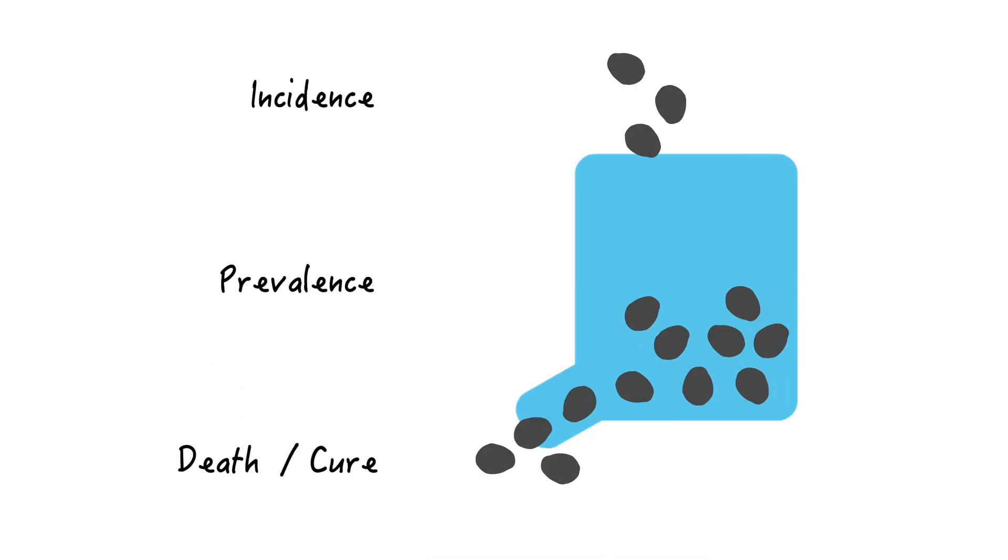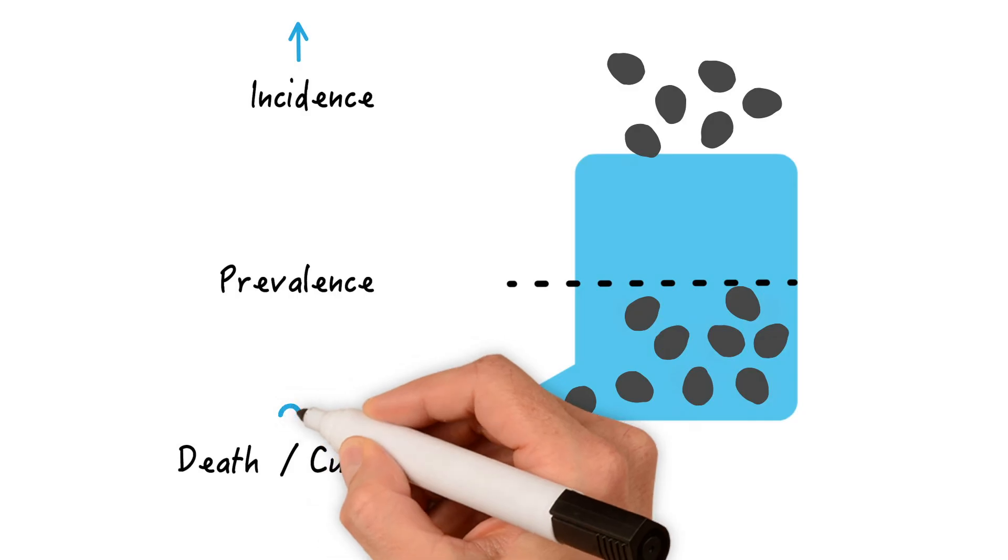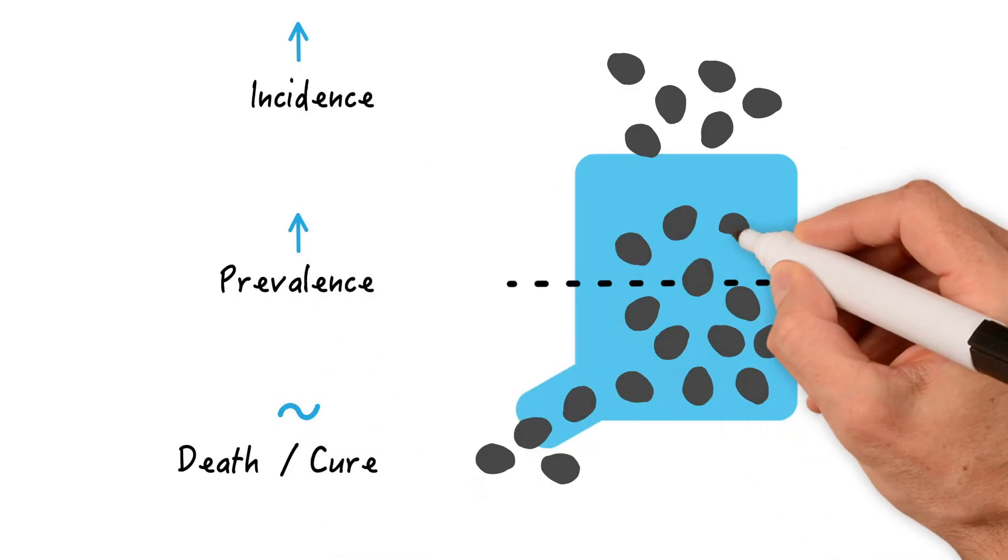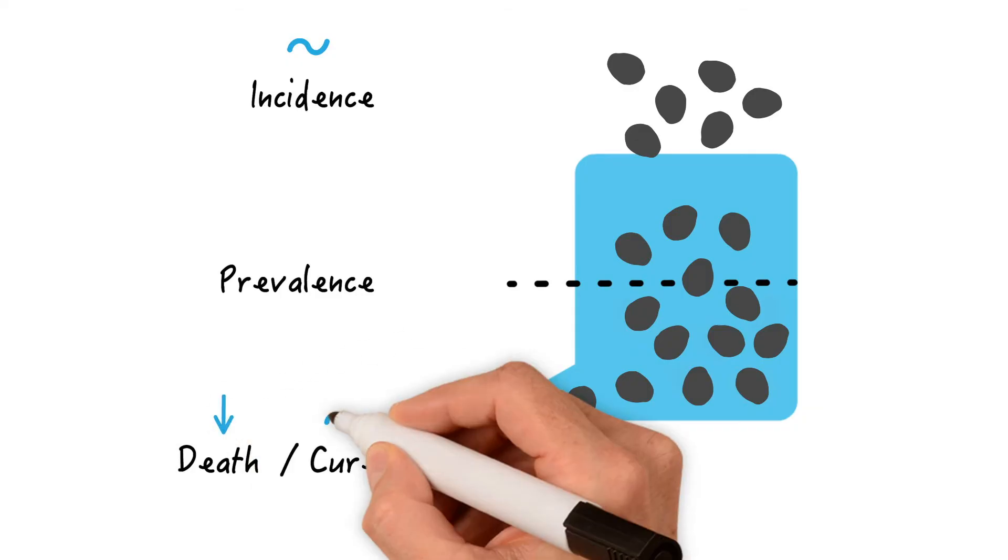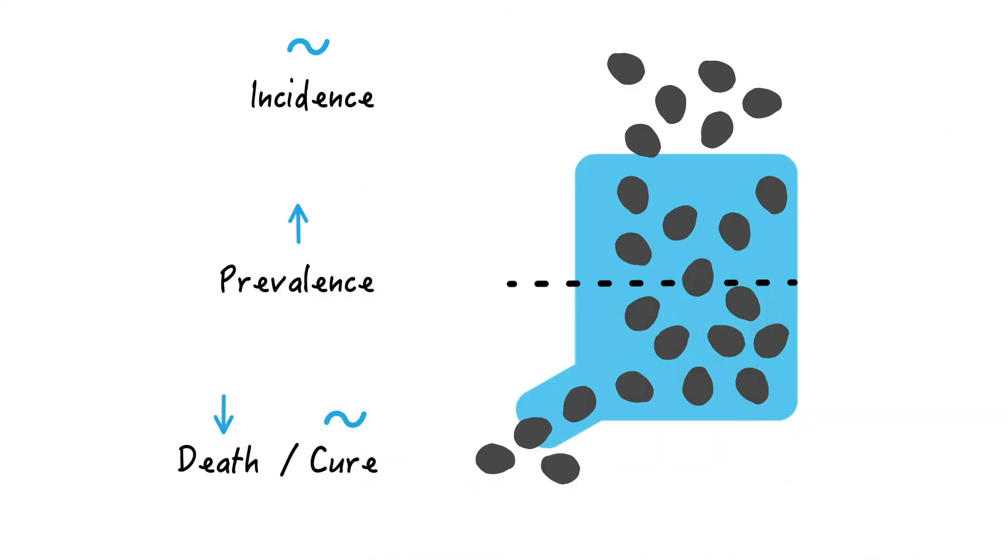Let's have a closer look. Let's say this is our baseline prevalence. Now what happens to prevalence if incidence goes up while death and cure stay the same? It has to go up, right? What happens if incidence stays the same but death goes down while cure rate stays the same? It will go up since fewer pebbles will leave the vessel.